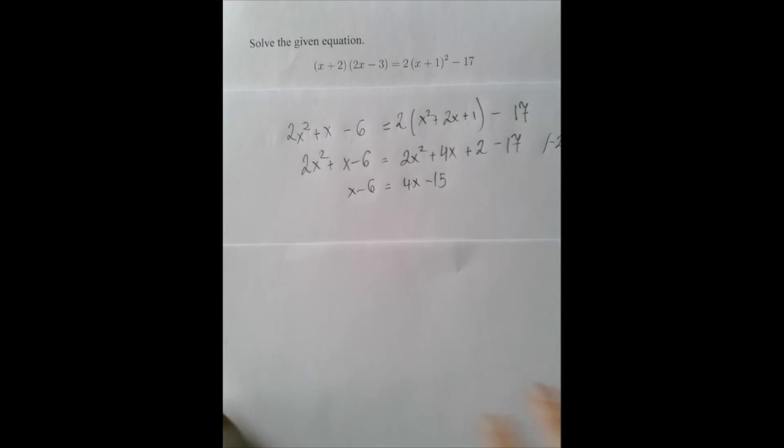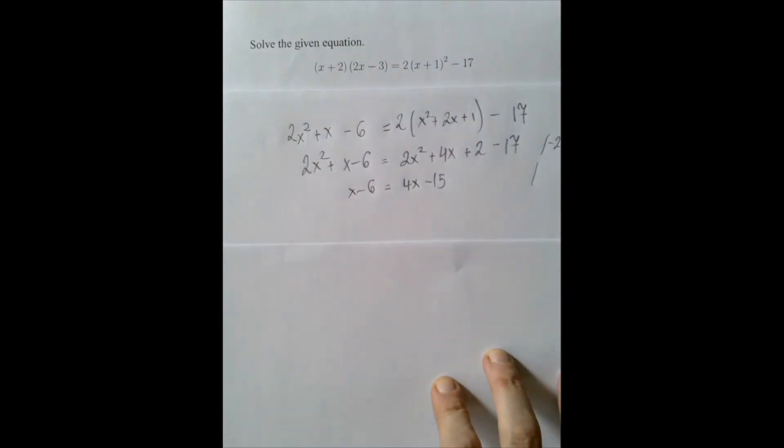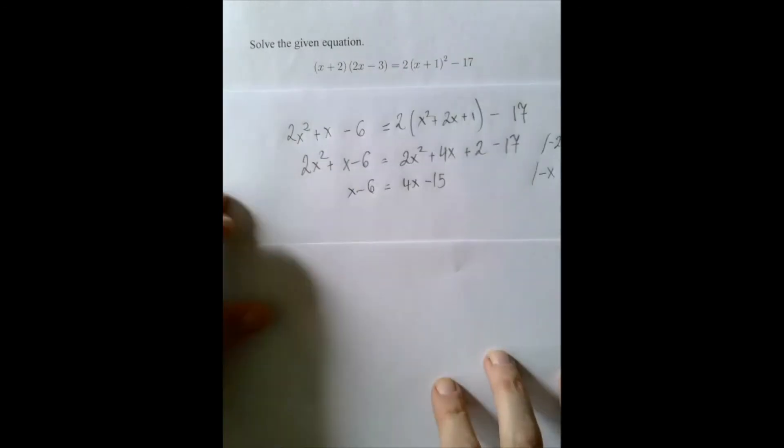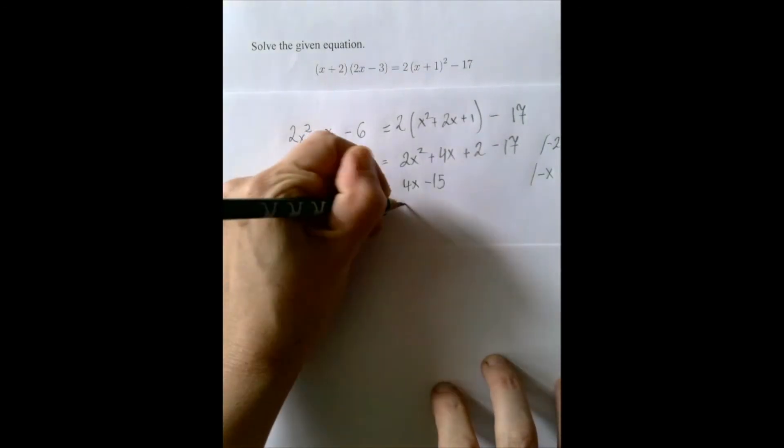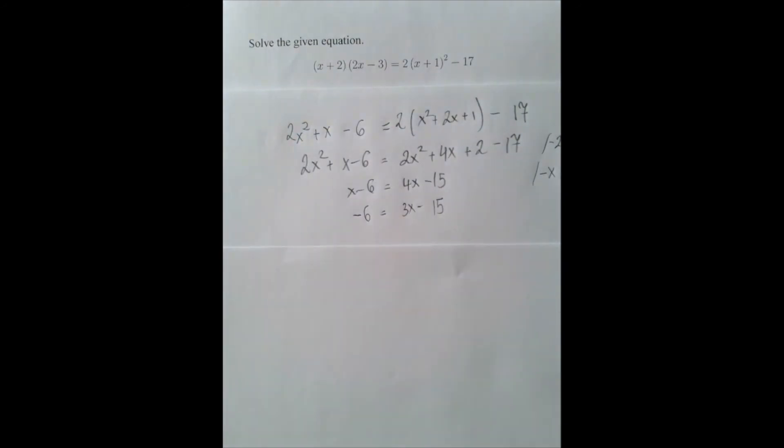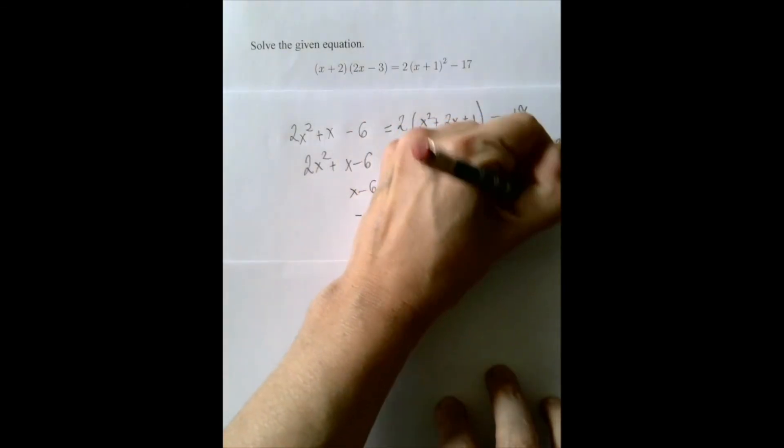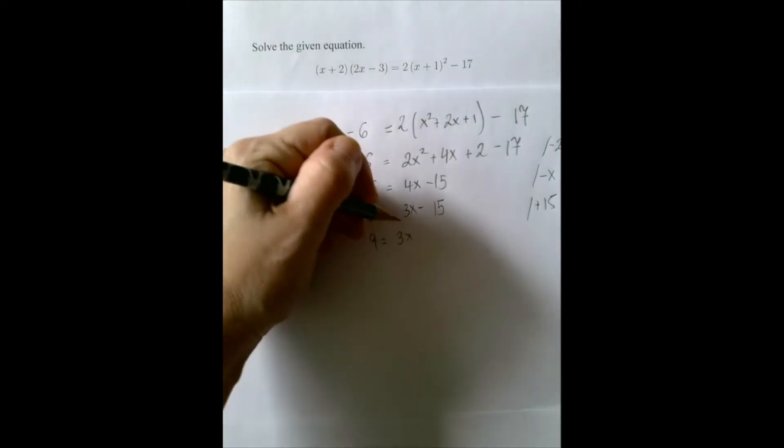We are going to subtract 6. We are going to subtract x from both sides. Now, x is on the right-hand side. We are going to isolate it there at 15. And finally divide by 3.